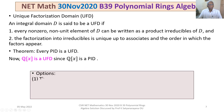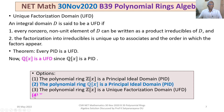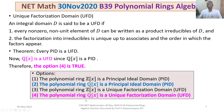Looking at our options, Q[X] being a UFD is stated in option 4. So option 4 is true. We have to find the statement among the four options which is not true, and so far options 2 and 4 are confirmed true.